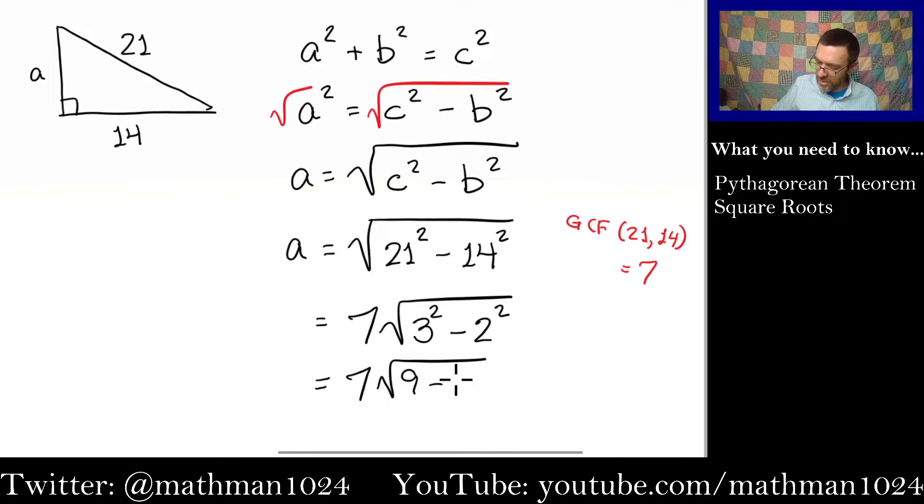And now, all we have to do is work out this radical. So, that's 9 minus 4, which means that we would have 7 times the square root of 5. That's what a is going to be.